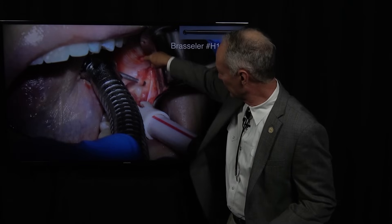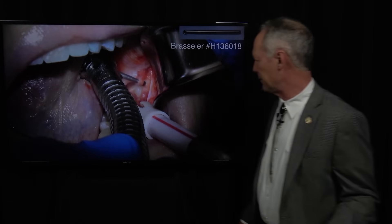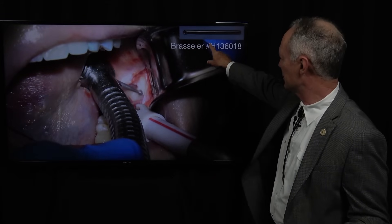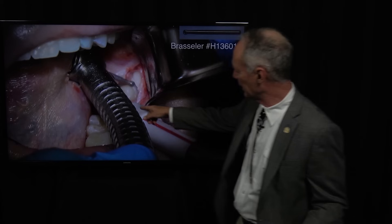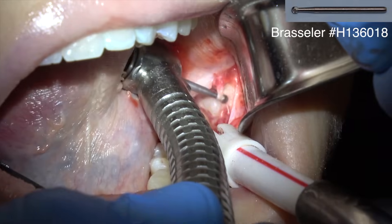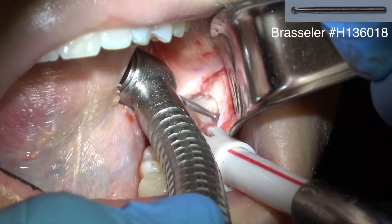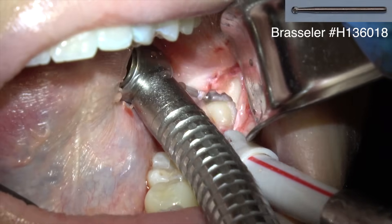And I'm making a cut in the bone and the tooth on the buccal aspect. And this is just a long shank brazilier round burr. You can see how I'm cutting a trough here on the buccal aspect of the tooth, extending it to the distal of the tooth.